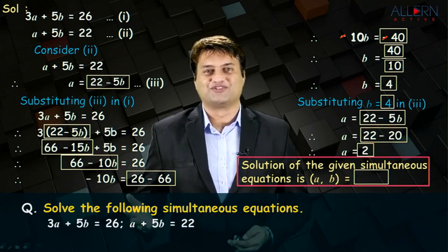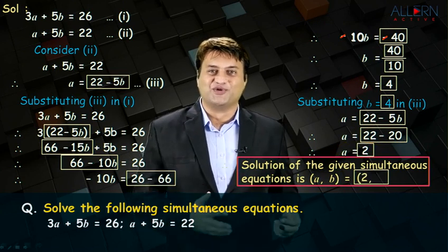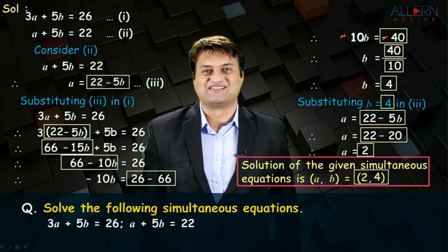You get the value of b as 4. The final answer is 2 comma 4. As simple as that.